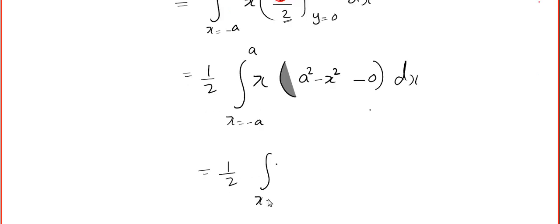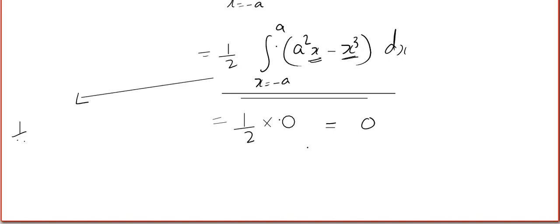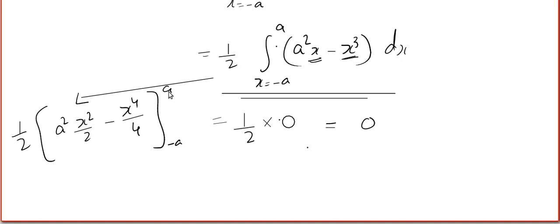Plugging in: (1/2) ∫ from −a to a of [a²x − x³] dx. By the first semester properties, this function is odd and the limits are symmetric from −a to a, so the answer is 0. Alternatively, you can integrate: a²x²/2 − x⁴/4 evaluated from −a to a — the upper and lower limits give the same value, so it cancels to 0.